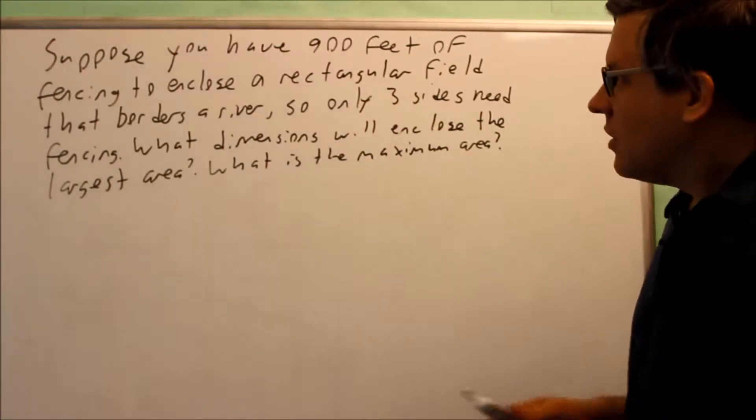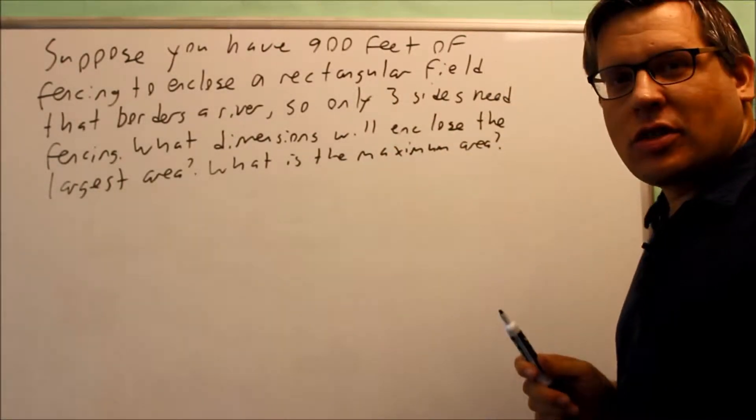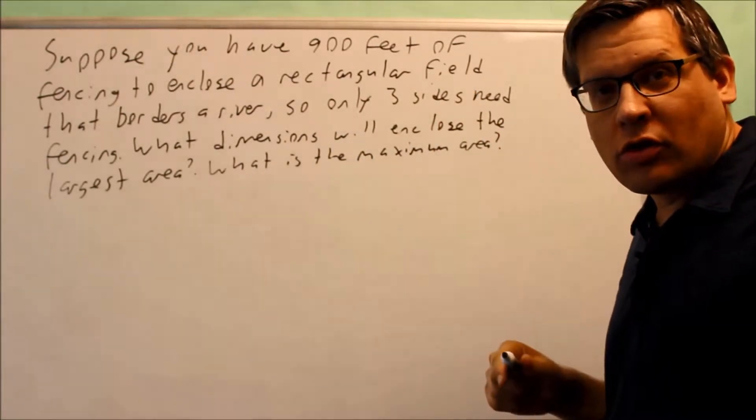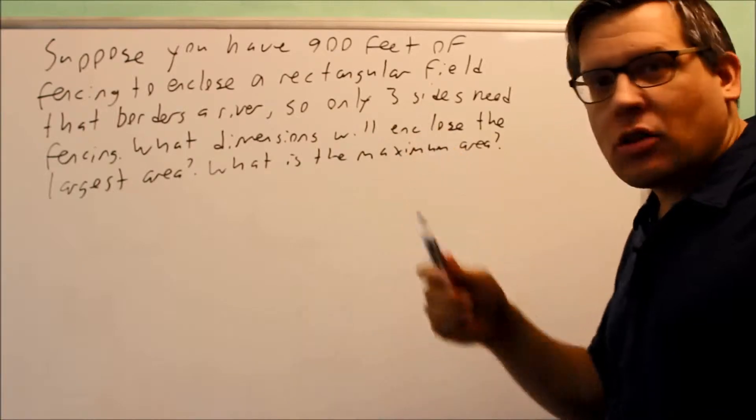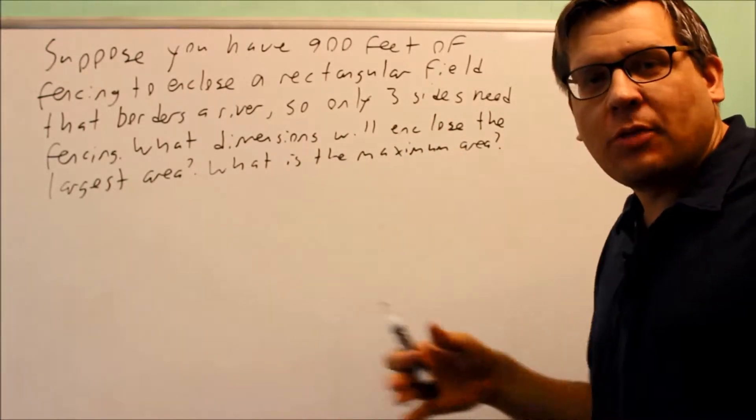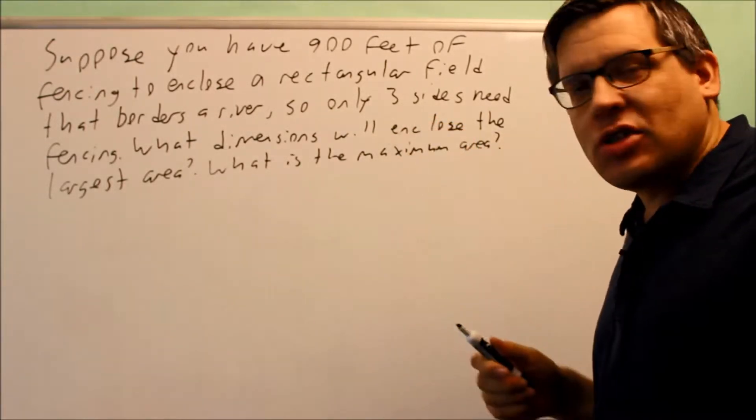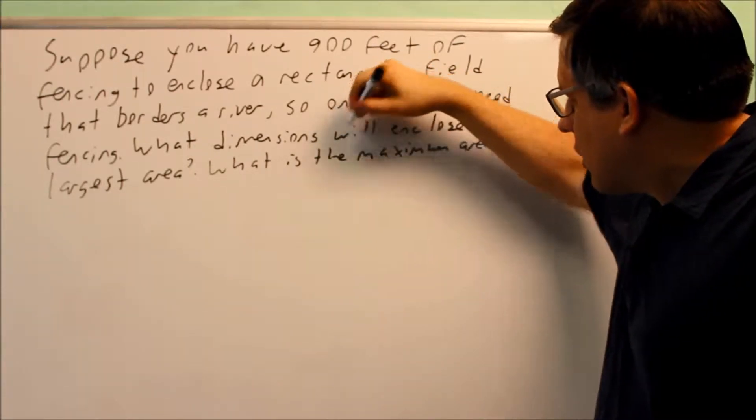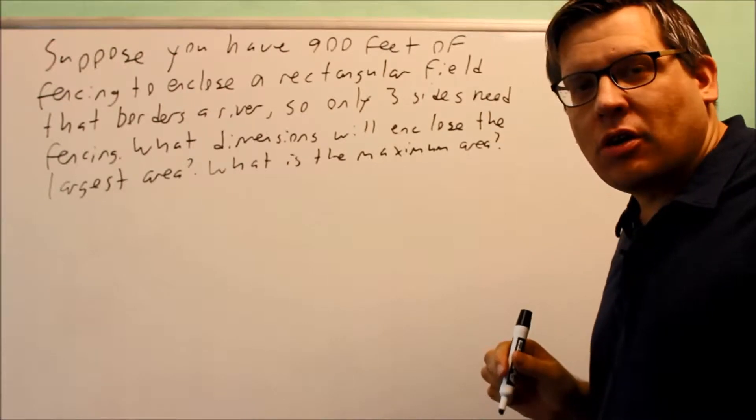We have this word problem: 900 feet of fencing is available and we're wanting to close a rectangular field that borders a river. The river forms one side boundary, so we only need fencing on the other three sides. What dimensions will enclose the largest area, and what is the maximum area?